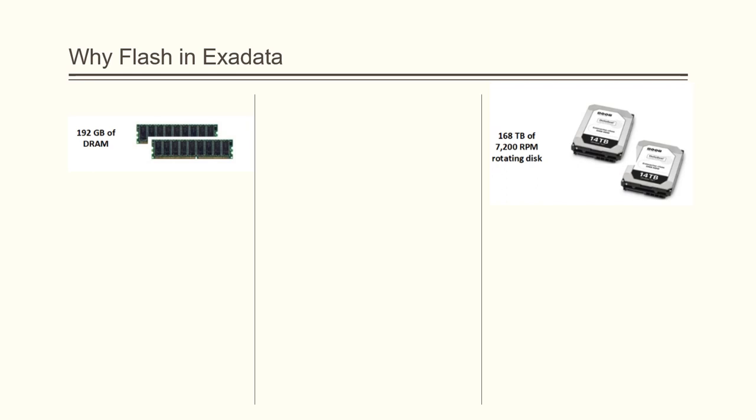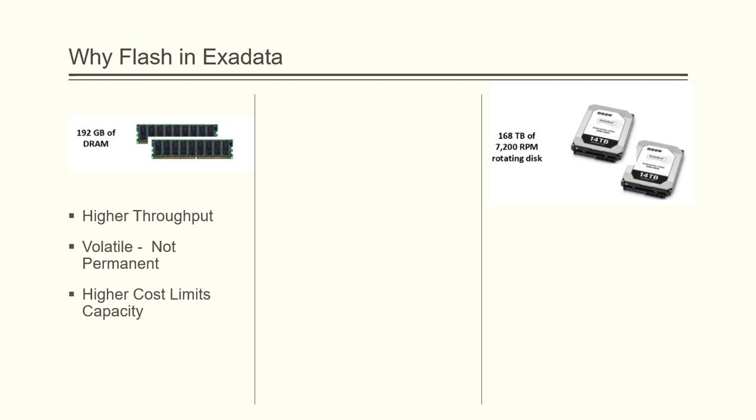In the storage area, there are always three key components involved: performance, capacity, and cost. Currently any machine will have DRAM and the rotating disk. When we look at DRAM, it has higher throughput which makes it very good in terms of performance. But the data inside the DRAM is volatile, so it is not permanent. Also, the cost is very high, which makes it suitable only for hot data.